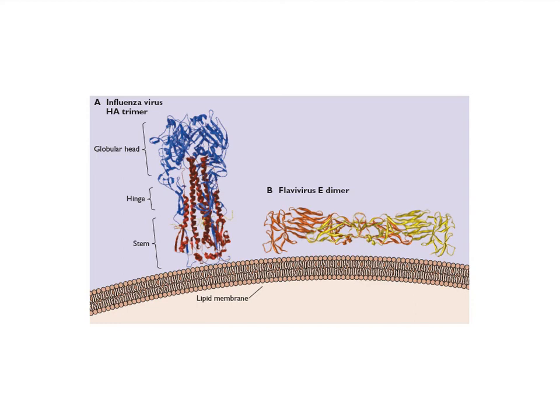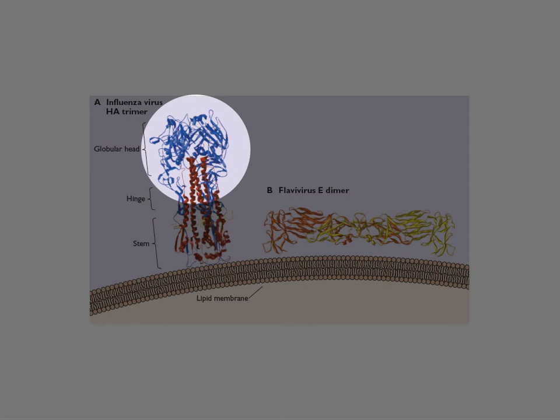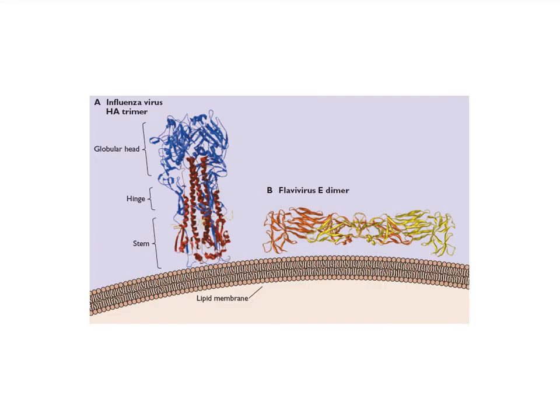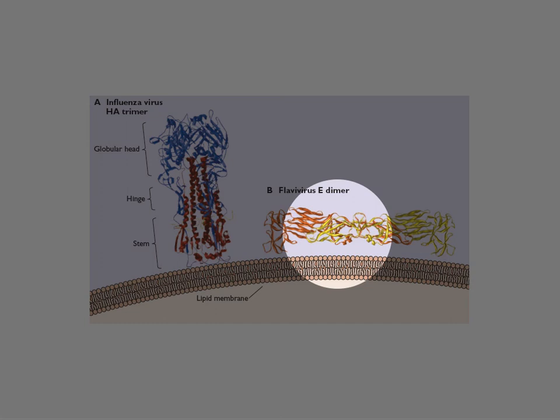Here on the left is an example of the influenza virus glycoprotein embedded in the viral membrane. This is called the hemagglutinin, and it's an extremely important protein for the virus — without it, it would not be infectious. It's what is used to attach to the cell receptor. Other viral glycoproteins can be arrayed parallel to the membrane, like this flavivirus glycoprotein, and they both work to attach to cell receptors.